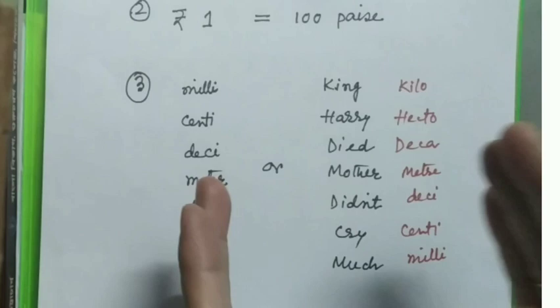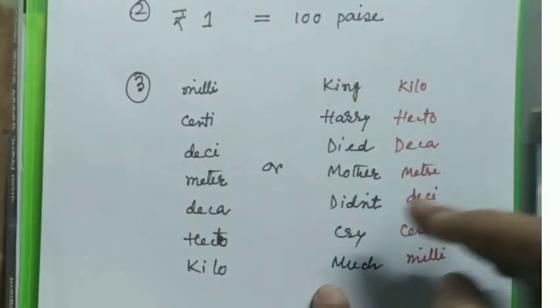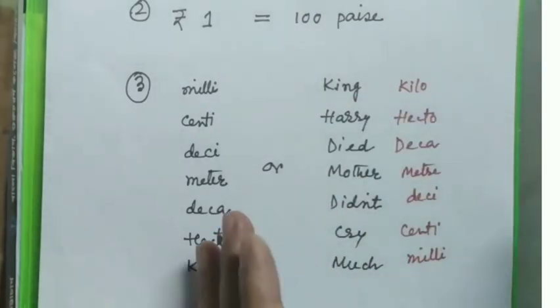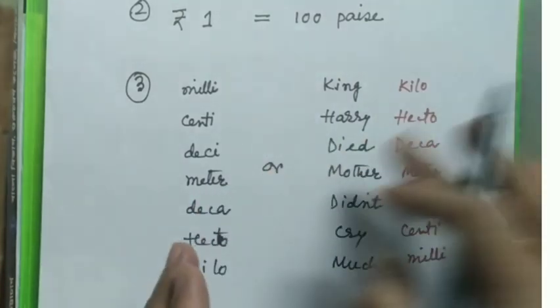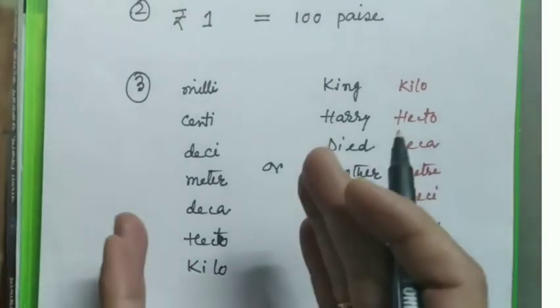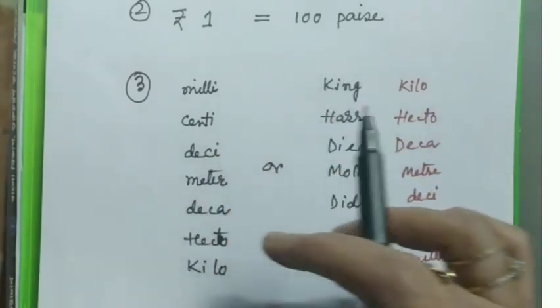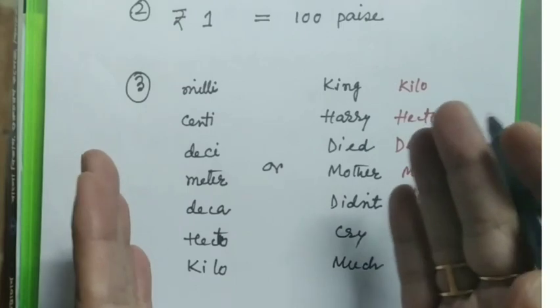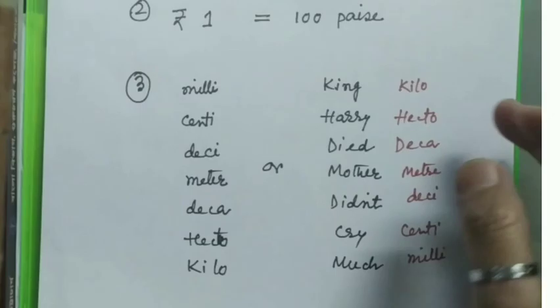These things - King Harry Died Mother Did Not Cry Much - are written for memorization of these prefixes and it will make it easier. But trust me, I always prefer the first one as I find it more comfortable to memorize. From my childhood days till date I remember like this only: milli, centi, deci, meter, deca, hecto, kilo, just like an English rhyme. Let's proceed.